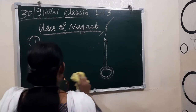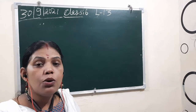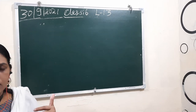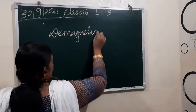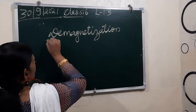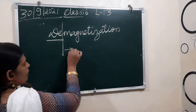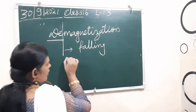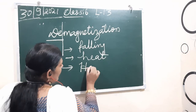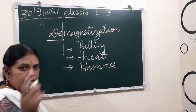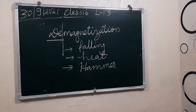Another important topic: when handling magnets, if a magnet falls accidentally from a height, it will lose its magnetic property. This is known as demagnetization — removal of magnetic power. Demagnetization happens when a magnet falls from a height, or when it is heated at a high temperature, or when it is hammered — beaten with a hammer.